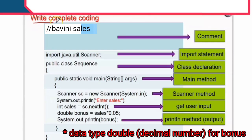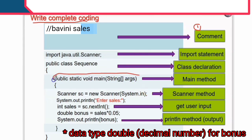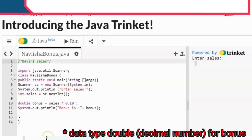This is the complete program structure. First, the comment — this is compulsory. Second, the import statement. Third, class declaration: public class Sequence — make sure the class name and file name match. Fourth, the main method with its correct syntax. Then the Scanner method is used to accept input data entered by the user. Next, the syntax to get user input, and finally the println method for the output statement.